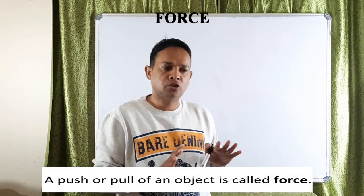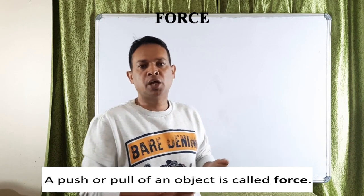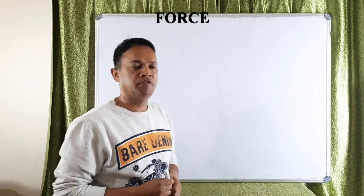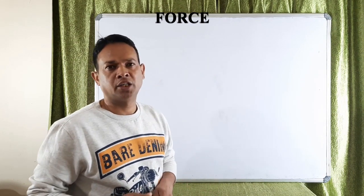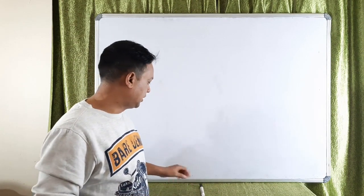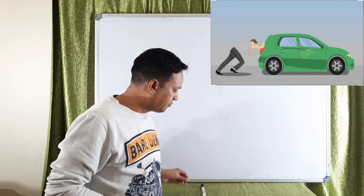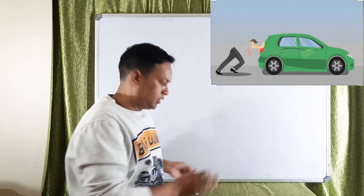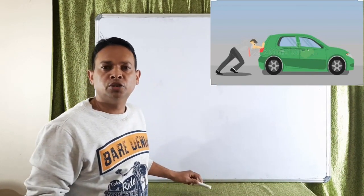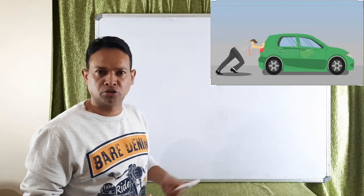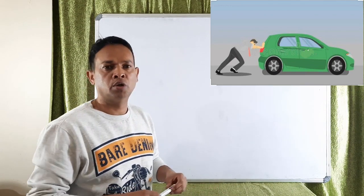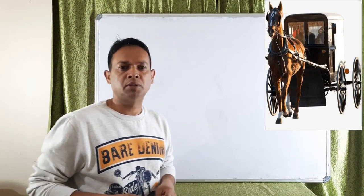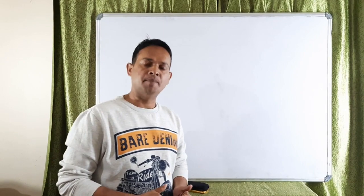Force can be of two types. The first type is contact force. For example, if I have to push this pen from one position, I have to touch it — without touching it, it won't move. This is an example of contact force. Contact forces include muscular force, where you use your muscles — for example, a horse pulling a cart is a muscular force.